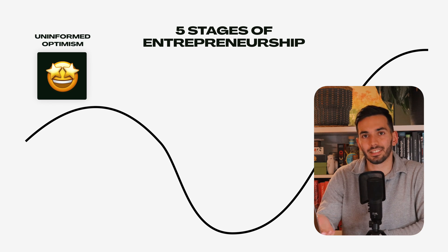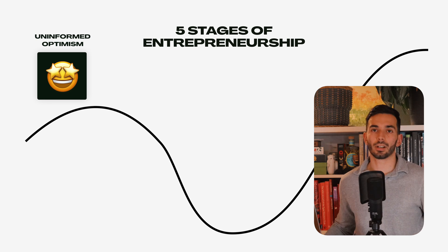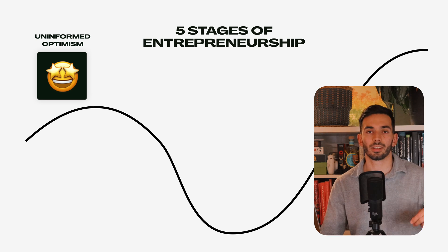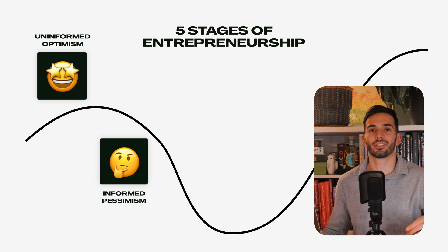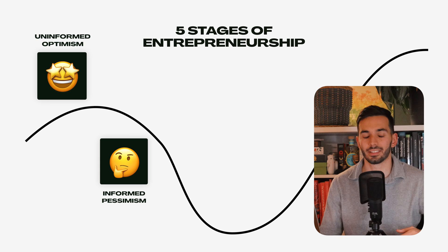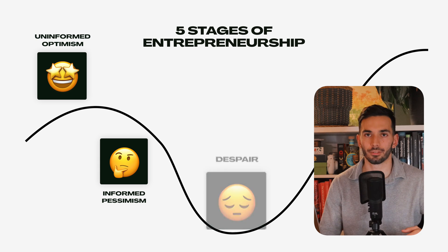When you go deeper and deeper and realize it's not as easy as you thought it would be, we call this stage the informed pessimism. You keep working on it, and then you get to a new stage which we call the valley of despair. This is where most people quit. They become frustrated, quit, and start something new and shiny again. They never actually get anywhere.